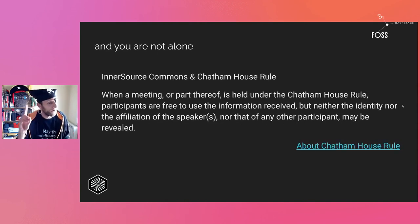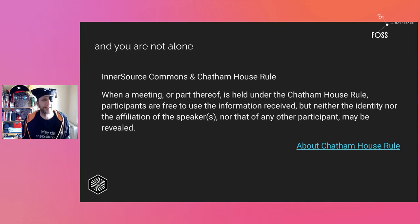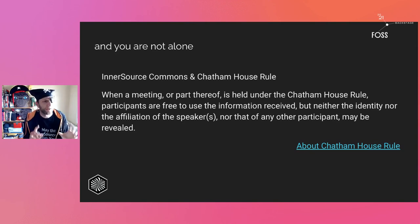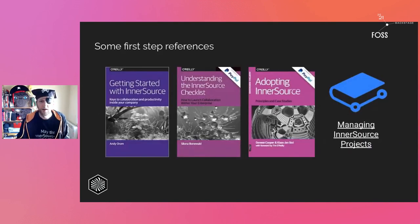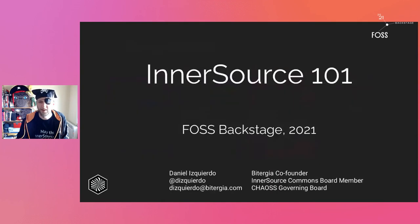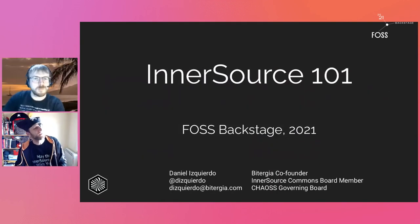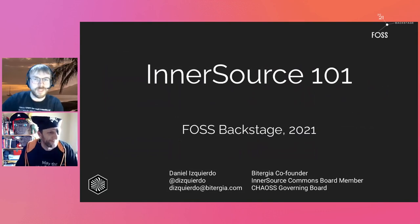There is one rule only: the Chatham House Rule. The goal is to create safe environments where people from different companies can meet. You can use information shared but cannot say who said what. This way we create a safe environment where everyone feels comfortable sharing. There are documents and books available at innersourcecommons.org. Please join the community, join the discussions — you are more than welcome. That's all for this InnerSource 101 — thank you very much.